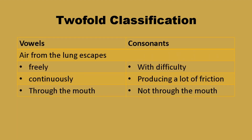Let us now define what is a vowel and what is a consonant. When we articulate vowel sounds, the air from the lungs escapes freely and continuously through the mouth. The entire oral passage is wide without any narrowing anywhere. It is able to escape continuously because there is no closure anywhere along the oral passage.